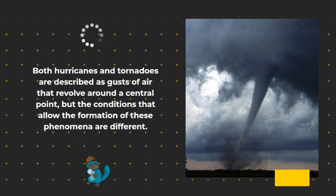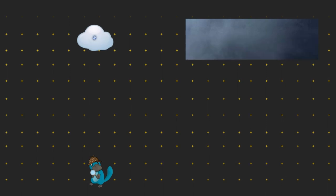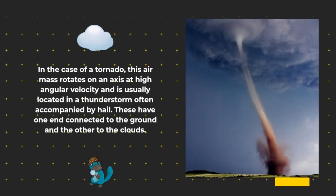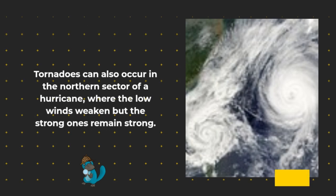Both hurricanes and tornadoes are described as gusts of air that revolve around a central point, but the conditions that allow the formation of these phenomena are different. In the case of a tornado, this air mass rotates on an axis at high angular velocity and is usually located in a thunderstorm, often accompanied by hail. These have one end connected to the ground and the other to the clouds. Tornadoes can also occur in the northern sector of a hurricane where the low winds weaken but the strong ones remain strong.